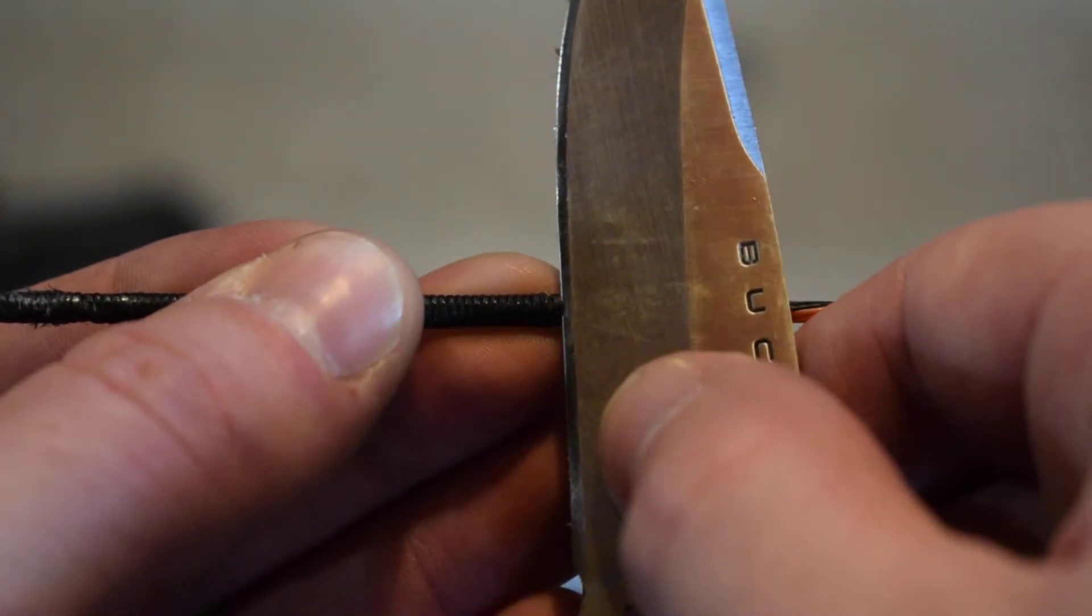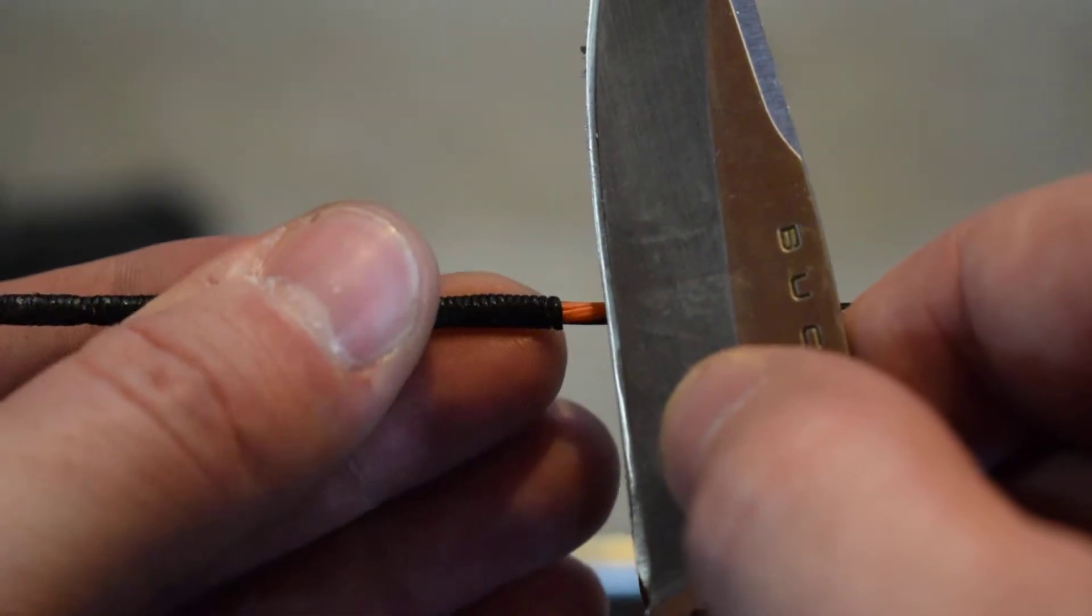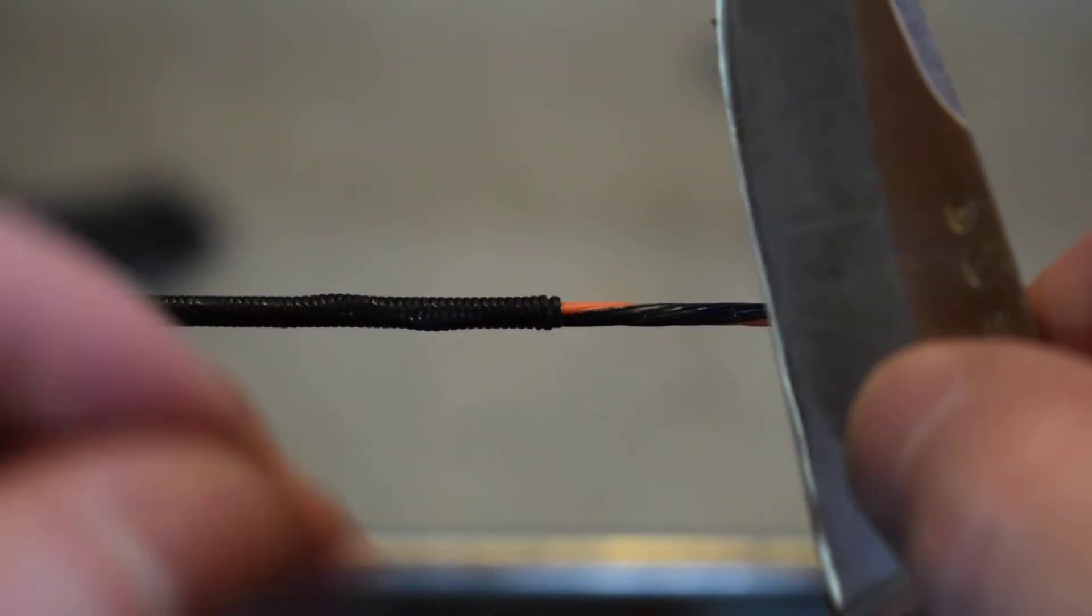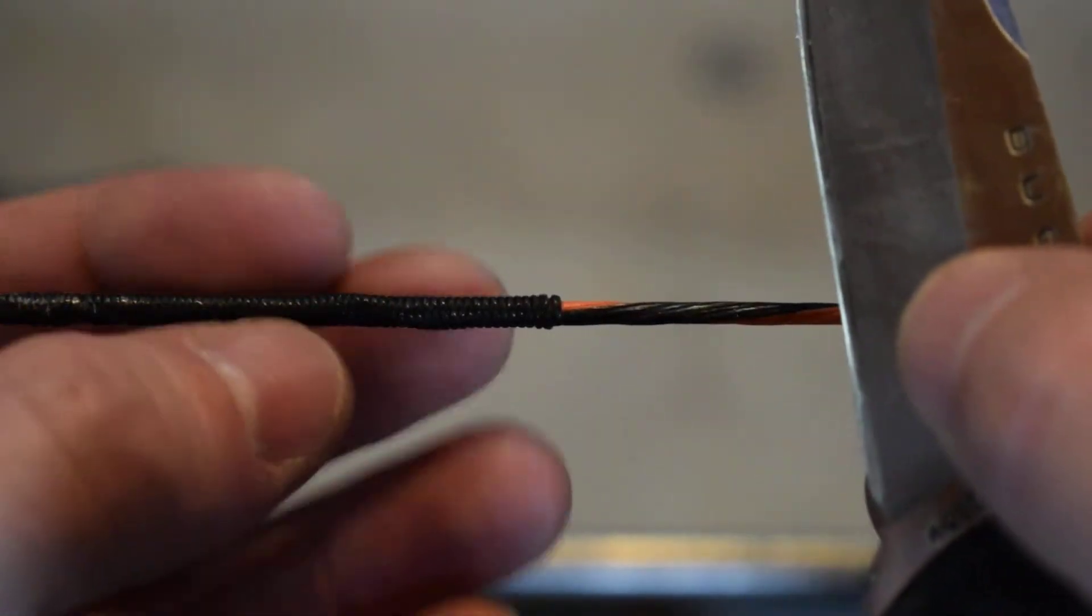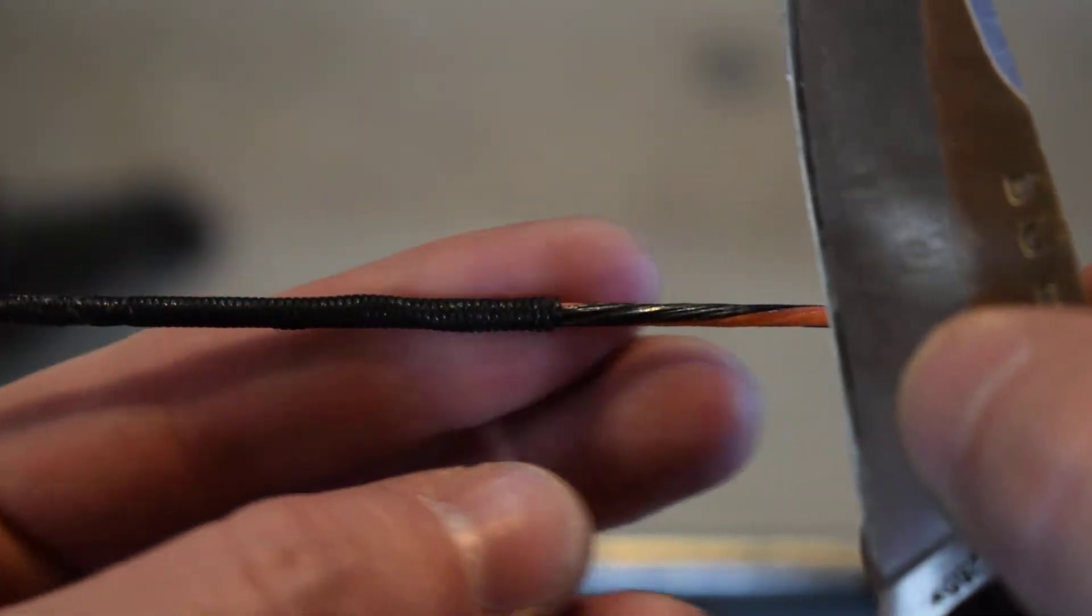Come up to the first wrap of serving and find the high side. There will always be a high side where the tag end goes directly beneath the rest of the material as it's laid out.